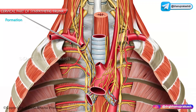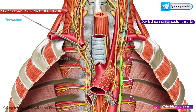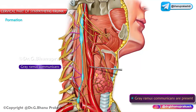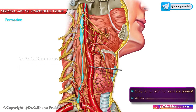The trunk is formed by fibers which emerge from segments T1 to T4 of the spinal cord and then ascend into the neck. The gray rami communicantes are present, but the white rami communicantes are not present in the cervical part of the sympathetic trunk.